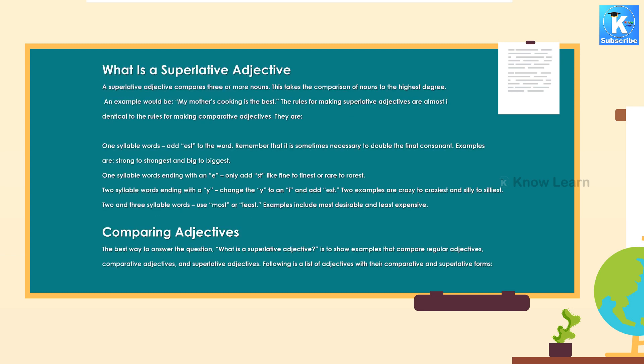What is a superlative adjective? A superlative adjective compares three or more nouns. This takes the comparison of nouns to the highest degree. An example would be: my mother's cooking is the best.